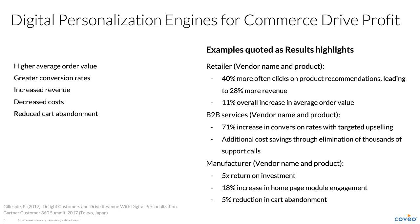In a B2B services environment, one provider saw a 71% increase in conversion rates through more targeted upselling to folks in its procurement cycle, and was also able to eliminate support costs. In a manufacturing environment, there was an 18% improvement in engagement with shopping modules on the homepage and a 5% drop in cart abandonment. At scale, saving a quarter point or half a point adds up very quickly — it's like compound interest.